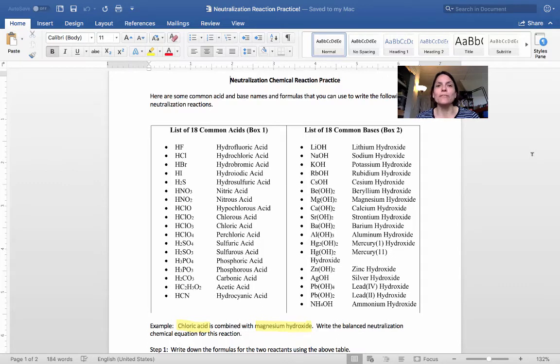But what do we mean by the salt? Well the salt is the combination of the anion from the acid, that's not the H+, and the cation from the base, that is not the OH-. Basically what happens is you take the other half of the acid and the other half of the base, put it together into an ionic compound, and you have your salt.